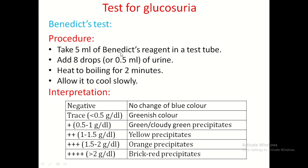Procedure of the Benedict test: take 5 ml of Benedict reagent, add 8 drops (0.5 ml) of urine, heat to boiling for 2 minutes, and allow to cool. Interpretation: if it remains blue — negative. Green colour without precipitate — trace (less than 0.5 g/dL). Green colour with precipitate — +1. Yellow precipitate — +2. Orange precipitate — +3. Red or brick-red precipitate — +4.